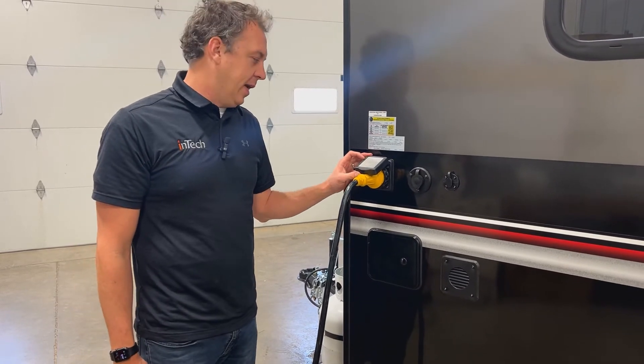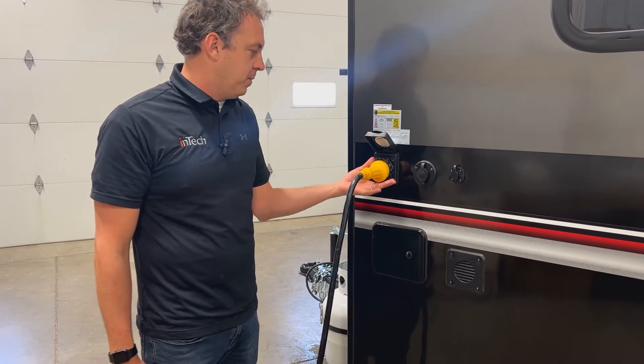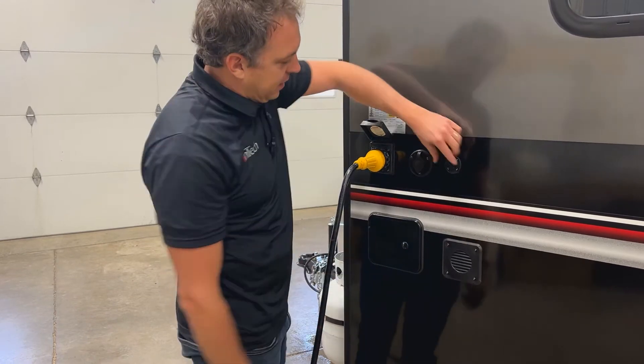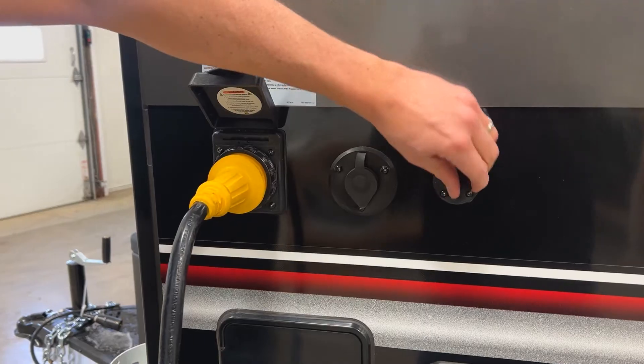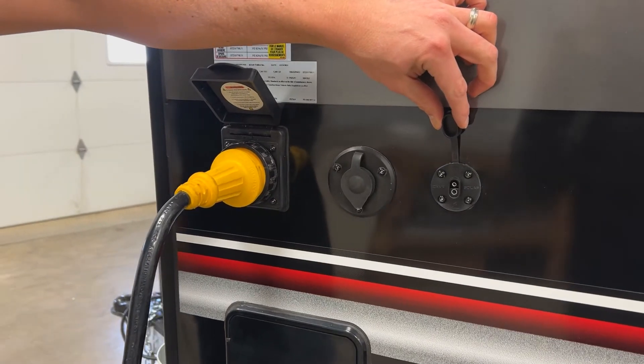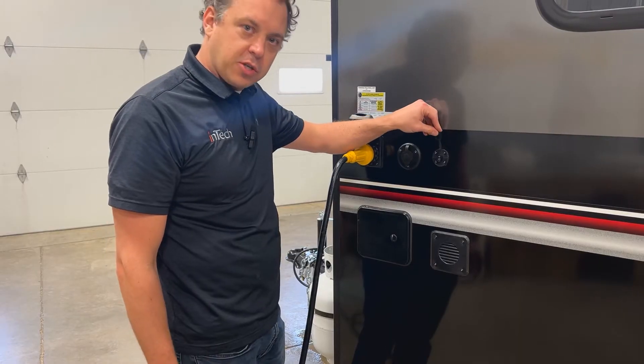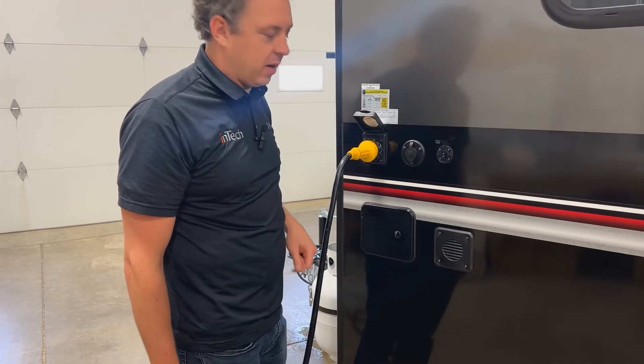Here on the outside of your unit, you've got your 30-amp shore power connection right here. Then you've also got the Zamp plug that we talked about. If you wanted to have a solar briefcase or something, you could plug in here. You could also put in a trickle charger for your battery if it's in storage.